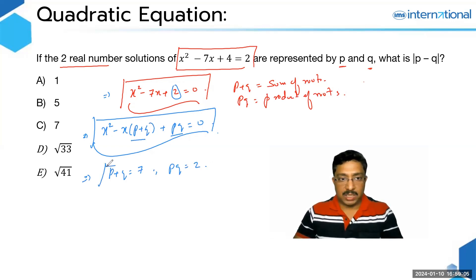So this reminds us of one formula. When A + B is given and you have the value of AB, then (A - B)² is nothing but (A + B)² - 4AB. So using this concept here, we can write (P + Q)² - 4PQ as (P - Q)².